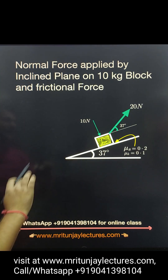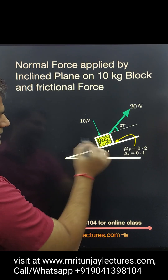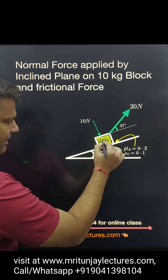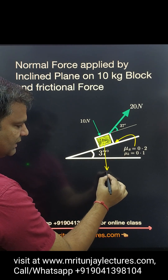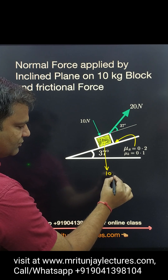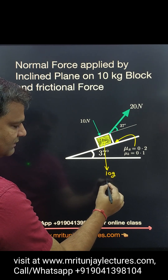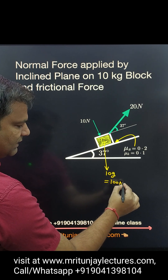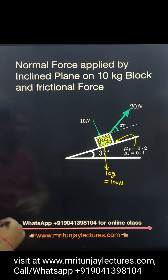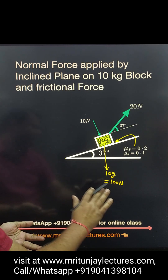First of all, make a free body diagram of the 10 kg block. Weight always acts downward — that is 10 into g. If g equals 10, then that is 100 Newton.